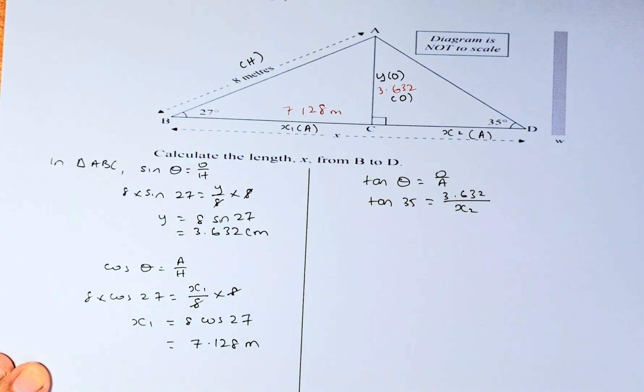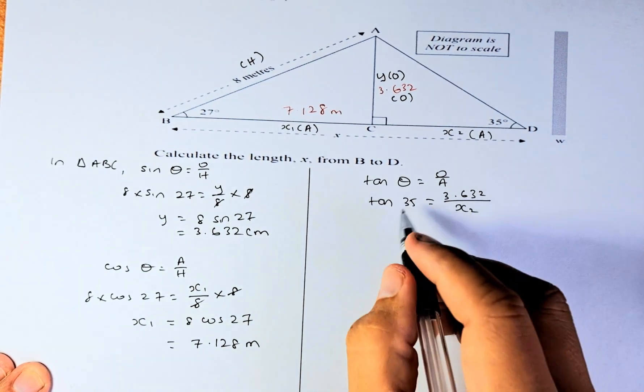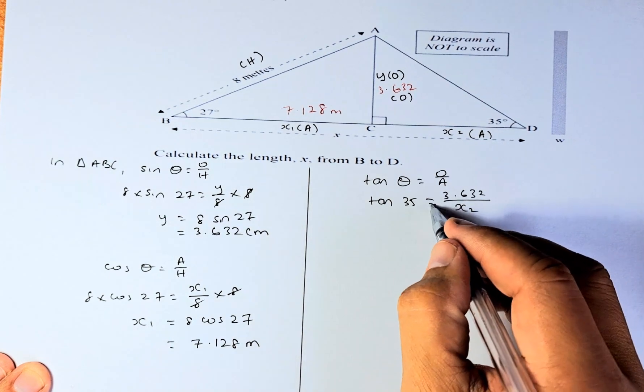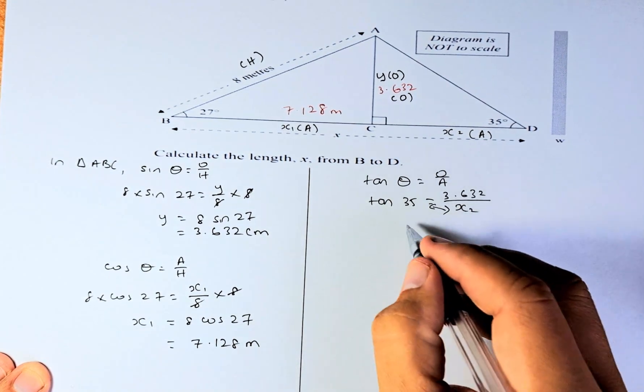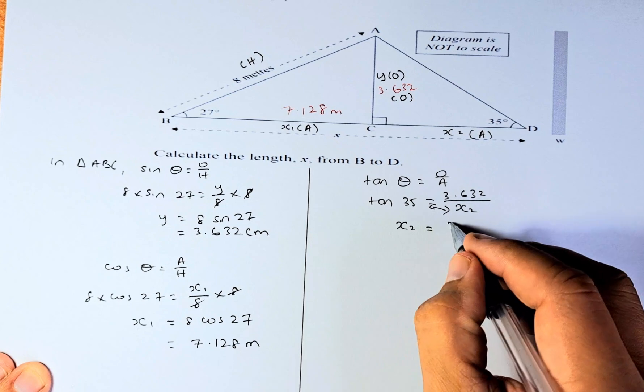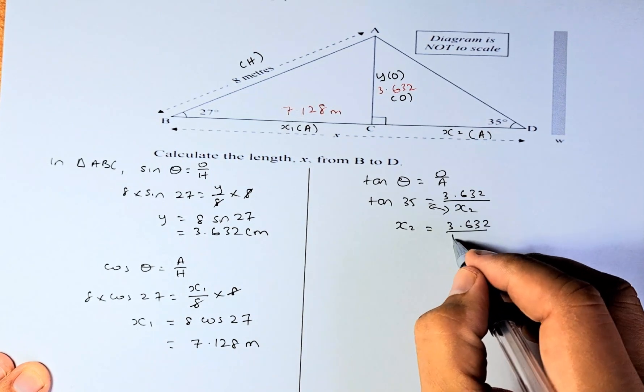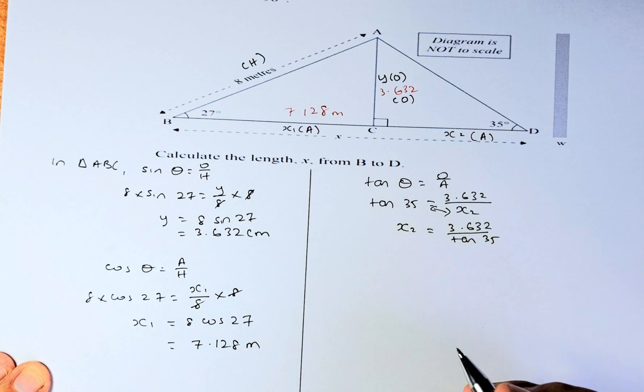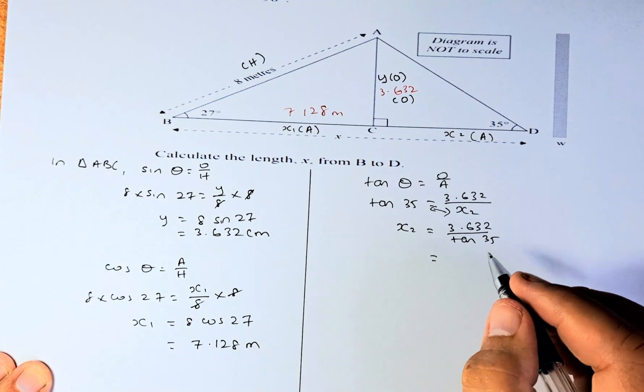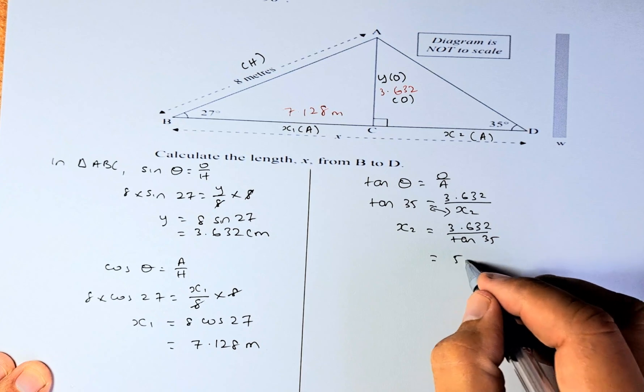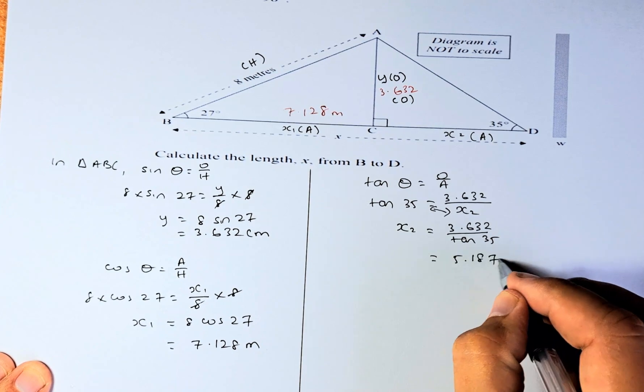Now X is at the bottom. You need to swap places. X2 goes up, and tangent 35 comes down. So X2 equals 3.632 divided by tangent 35. Put it in your calculator, and X2 is going to be 5.187 meters.